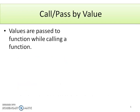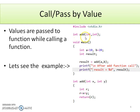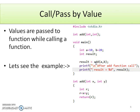Now let's see what we mean by call or pass by value. As explained previously, values are passed to the function during a function call. We will see an example where we perform the addition of two numbers using a function named add. We pass two integer parameters to it, and its return type is integer. In the main function, three integer variables a, b, and result are declared. This statement is the function call where we call function add by passing the values of variables a and b. Control transfers from the calling function main to the called function add.